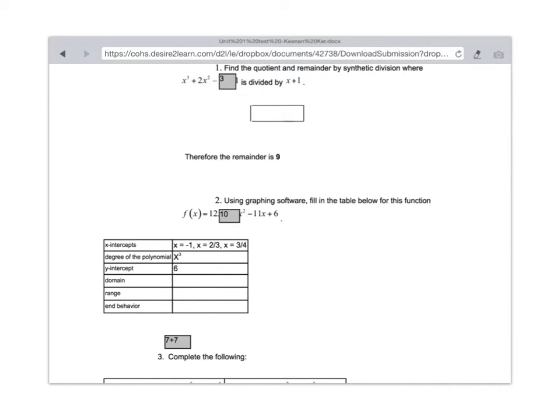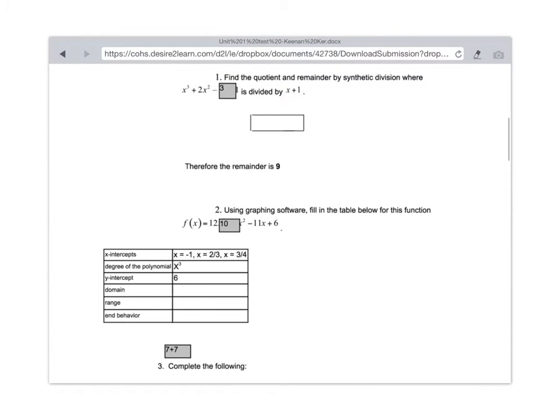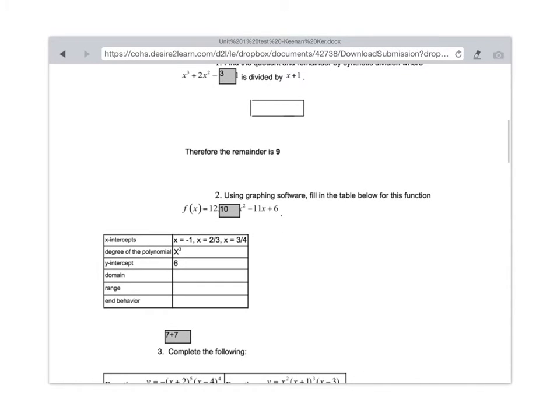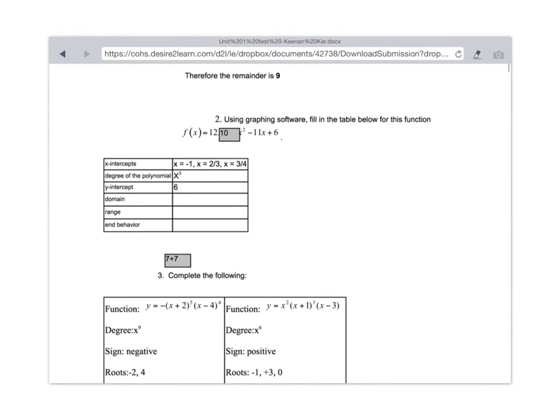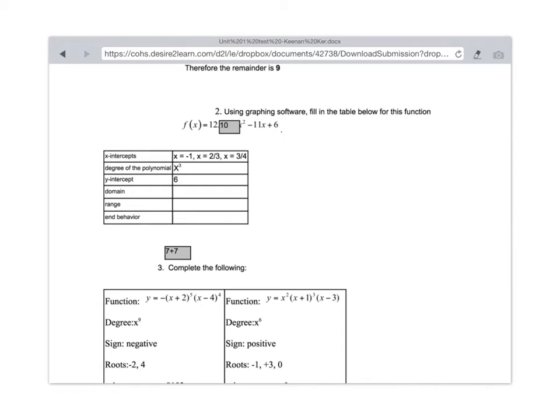For question 2, just looking at this one according to what you've got here. Maybe it's just messed up because of the formatting. But if the highest exponent is 2, then the degree of the polynomial is 2. And you should just write that as a number in this box. Don't write it as x to the third or x squared, just write it as a 2. Your y-intercept definitely is 6.